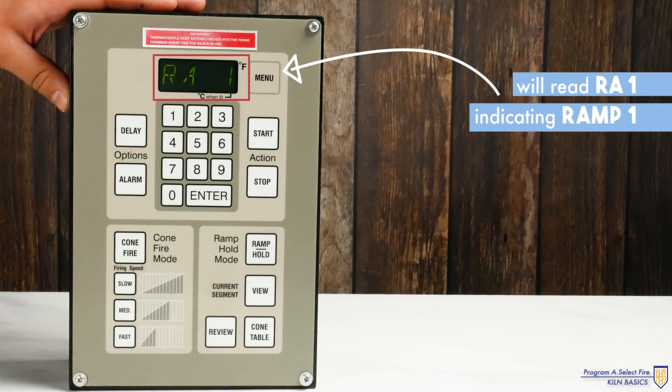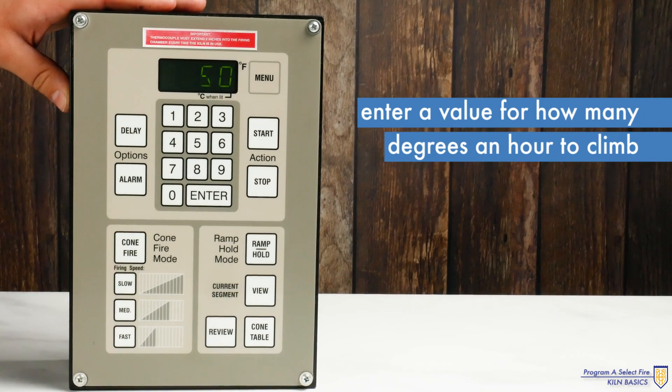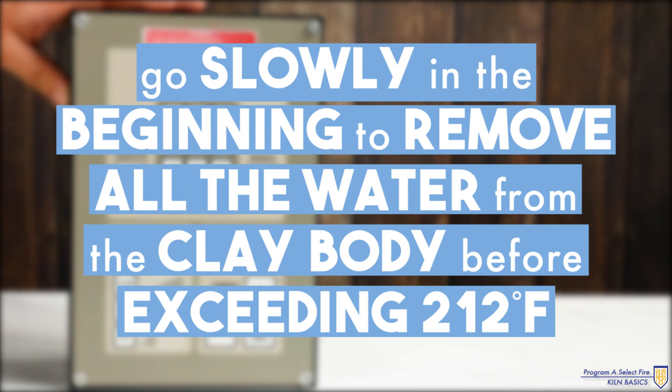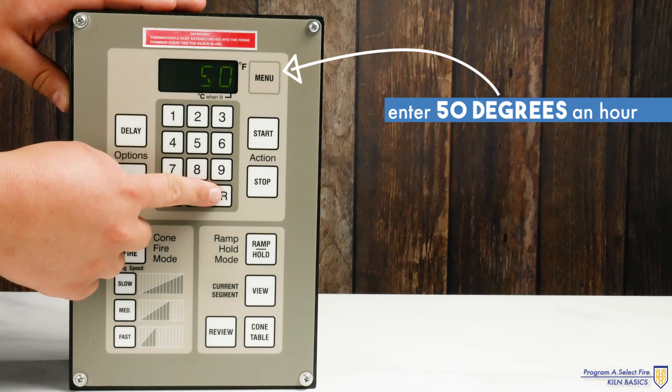It will read RA1 indicating ramp 1. Enter a value for how many degrees an hour you want to climb for this section. Remember we want to go slowly in the beginning to remove all the water from the clay body before exceeding 212 degrees Fahrenheit. We'll enter 50 degrees an hour and hit enter.